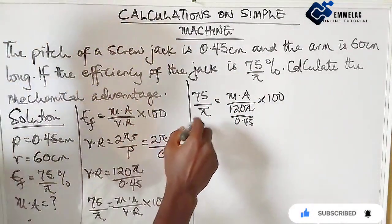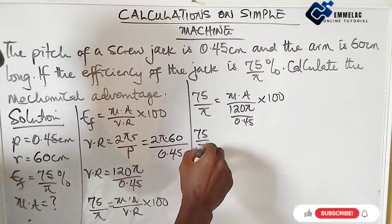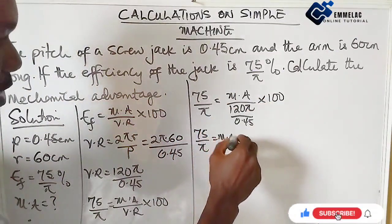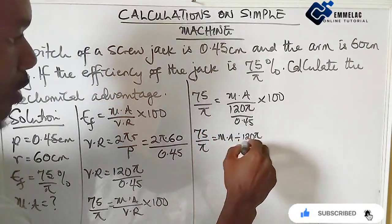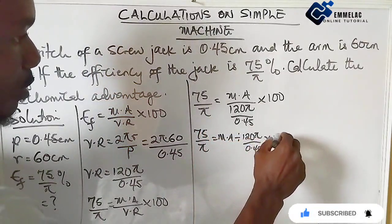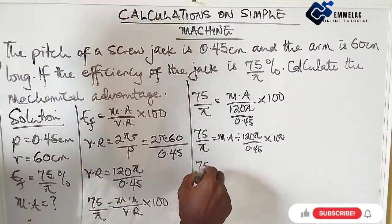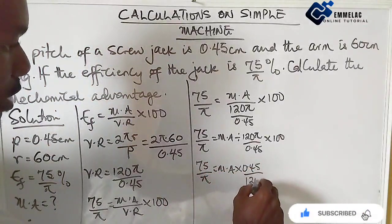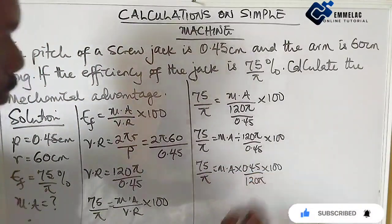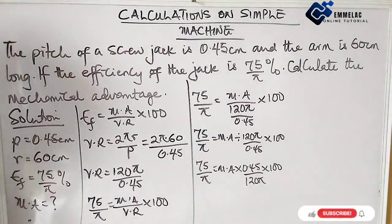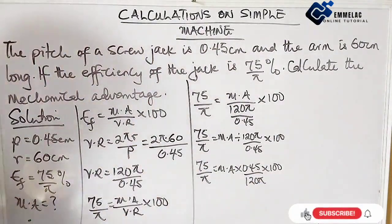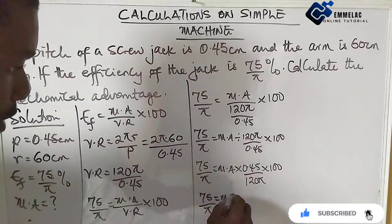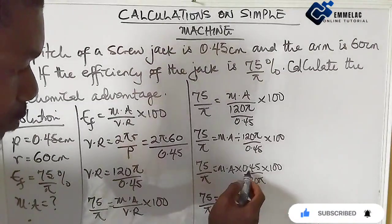So here we have the mechanical advantage over 120π over 0.45, times 100. This is the same as 75 over π equals mechanical advantage divided by 120π over 0.45 times 100. So here we have 75 over π equals mechanical advantage times 0.45 over 120π times 100.